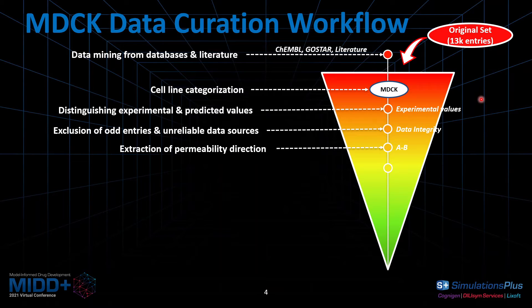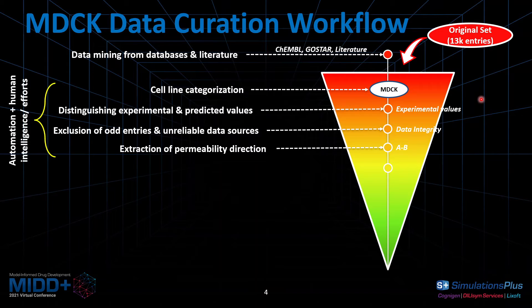The next step is permeability direction. We're only focusing on one direction, where it is traveling from apical to basolateral, so we extracted the permeability directions and retained only the A-to-B direction. Each of these steps is pretty heavy and tedious because we have to locate the original resources and extract the necessary information. So we use a lot of automation and text mining combined with human intelligence to help accommodate this process.